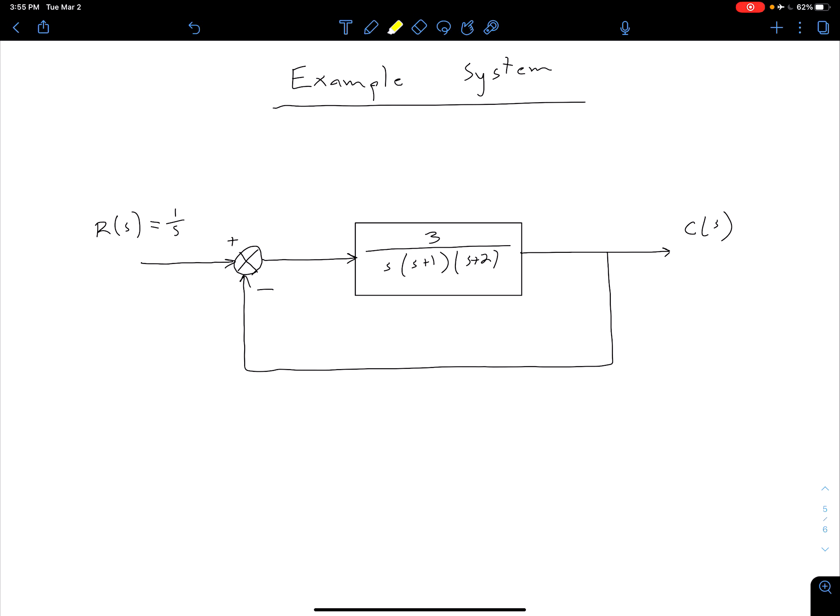Our input we see has a value of 1 over s, so that indicates we have a unit step for our input.